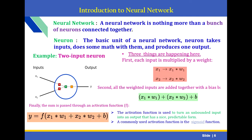A neural network is nothing more than a bunch of neurons connected together. What is a neuron? The basic unit of a neural network is a neuron. A neuron takes inputs, does some math with them, and produces one output. Here is an example of a two-input neuron. X1 and X2 are called inputs. Y is the output. There are some mathematical functions involved.